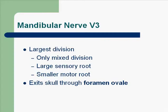The mandibular nerve, V3, is the largest division and the only mixed division. It has two roots: a large sensory root and a smaller motor root. This nerve exits the skull through the foramen ovale. Both motor and sensory roots leave the skull through this foramen, but do not unite as one nerve trunk until they are outside of the skull.